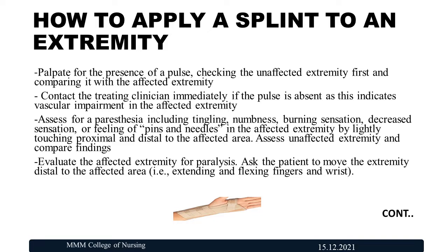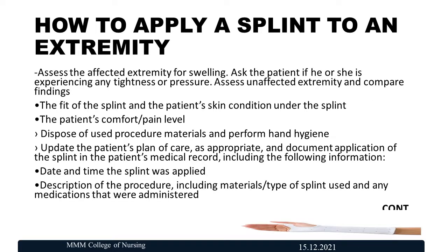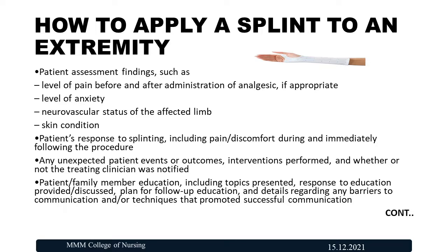Assess for paresthesia including tingling, numbness, burning sensation, decreased sensation, peeling, and pins and needles in the affected extremity by lightly touching the proximal and distal areas. Assess the unaffected extremities and evaluate the affected extremity for paralysis by asking the patient to move the extremities distal to the affected area. Assess swelling, tightness, fit, comfort, and pain level. Document the date, time, material, and type of splint used, medications given, pain level, anxiety, and neurovascular and skin conditions. Provide patient and family education regarding any unexpected problems.